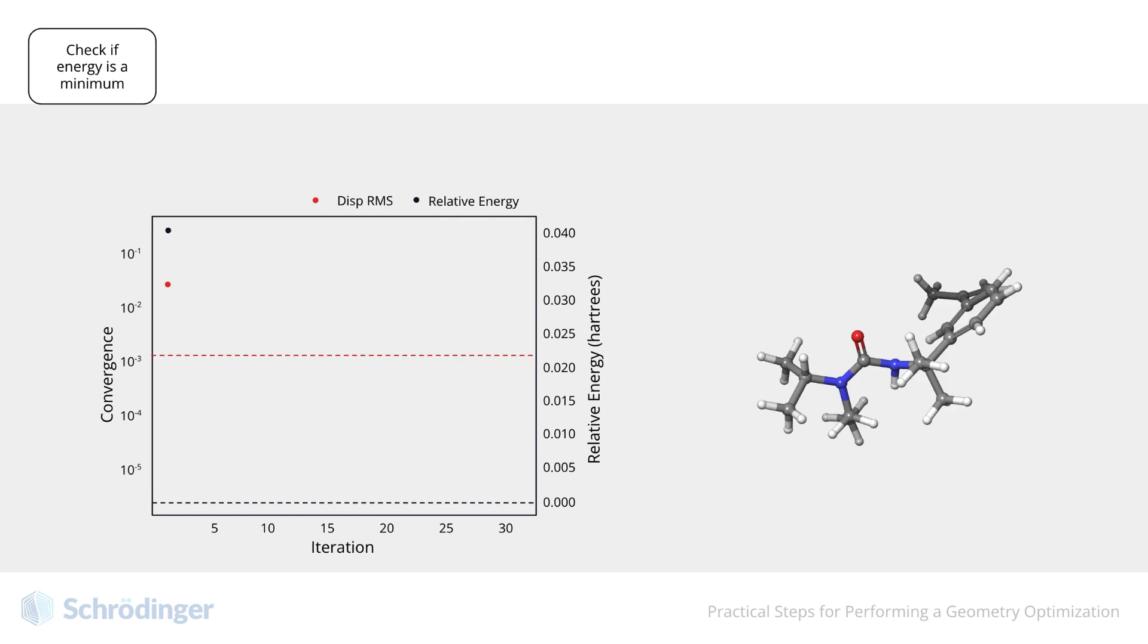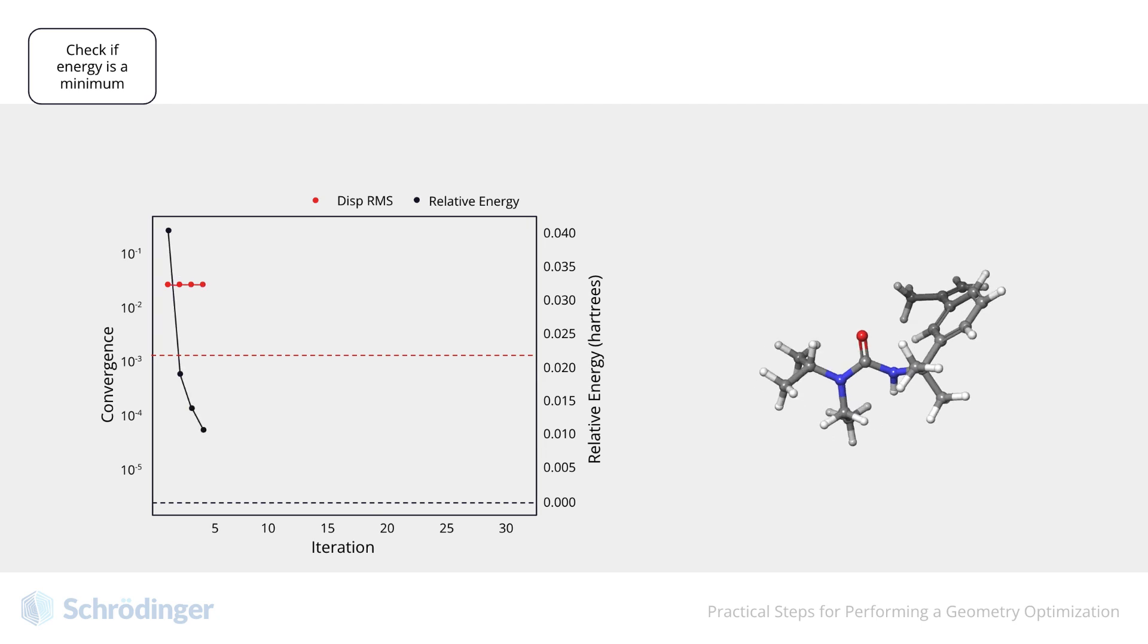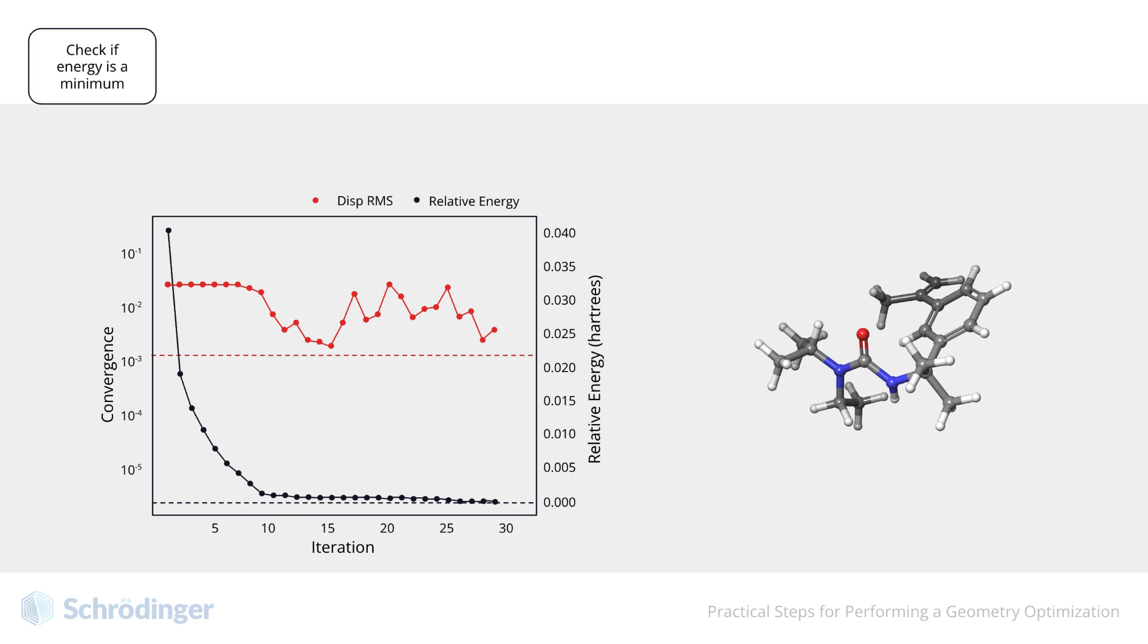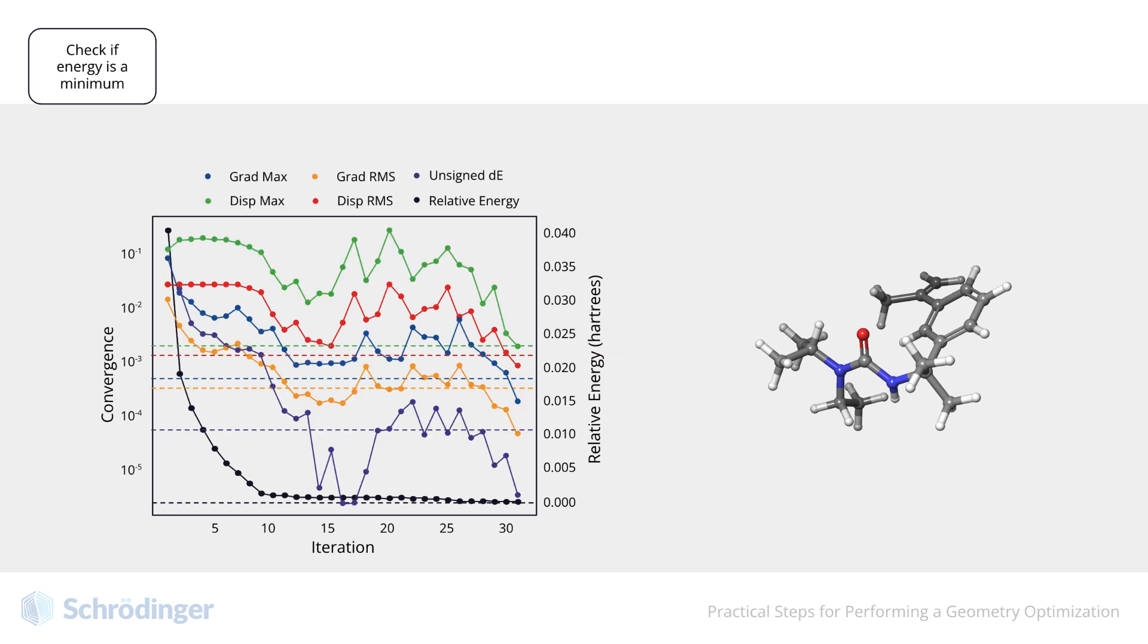Actually, in practice, in addition to looking at the energy change criterion, several other criteria are used. For example, an additional criterion is the extent to which the geometry changes from iteration to iteration. As the steps proceed, the displacement of the geometry will eventually fall below a certain threshold—here represented with the red dashed line. Normally, four or five of these different criteria have to be satisfied at the same time for us to declare that we have reached convergence. Different quantum chemical programs have different criteria, and then those criteria can be adjusted by the user.